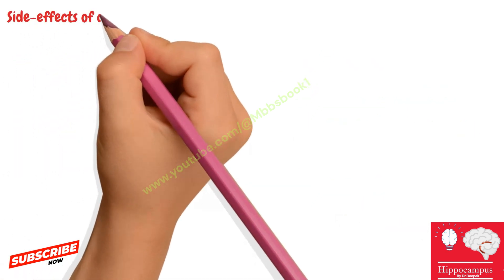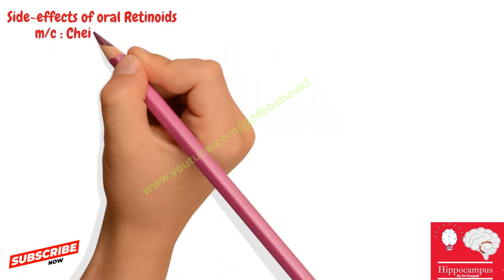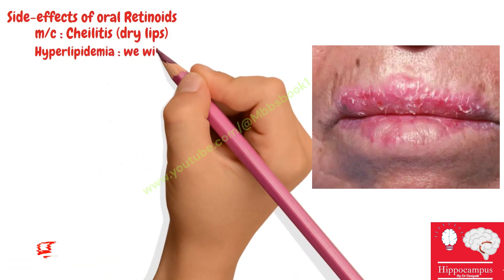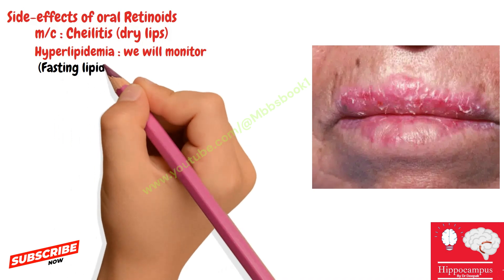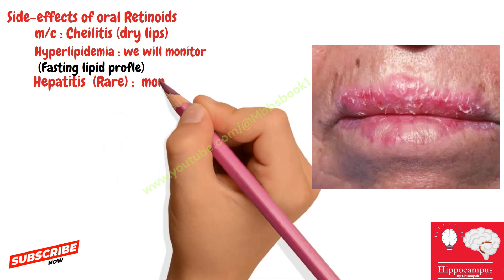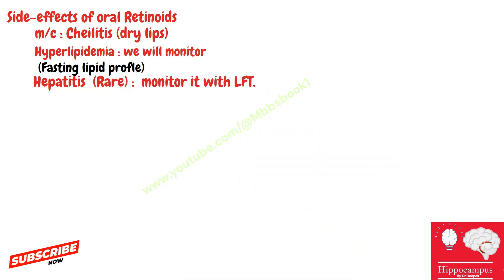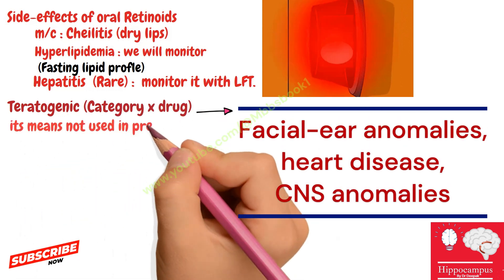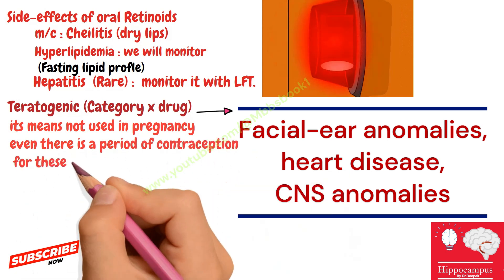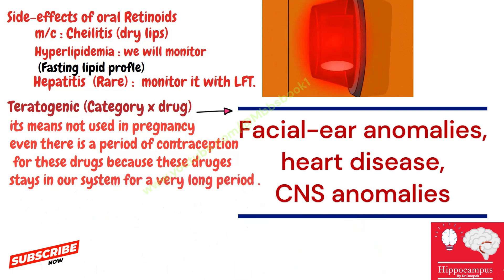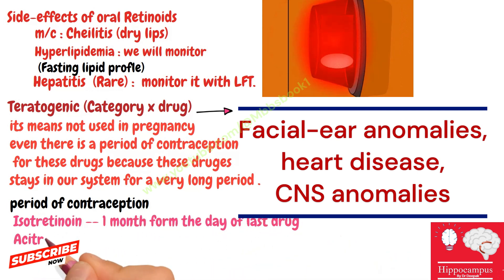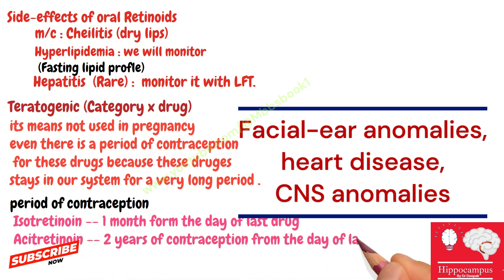Side effects of systemic retinoids: first and most common is cheilitis (dry lips), which also indicates patient compliance. Second is hyperlipidemia — increased cholesterol and triglyceride levels — so we monitor fasting lipid profile. Third is hepatitis, which is rare but monitored with liver function tests. Very importantly, systemic retinoids are teratogens — category X drugs, not used in pregnancy. The contraception period for isotretinoin is one month from the last dose, and for acitretin it is two years from the last dose.